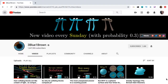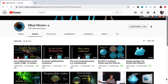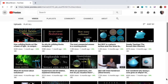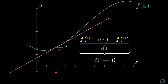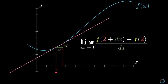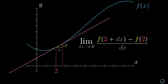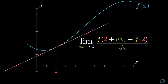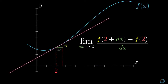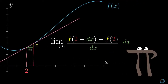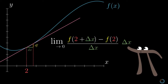Next up, we have 3Blue1Brown. This is traditionally a math channel — Grant Sanderson, the main man behind the scenes, teaches mathematical concepts using stunning visuals. For all you people aspiring to do something in AI, I highly recommend checking out his playlist titled The Essence of Calculus. He explains concepts like limits and determinants in such a visual way that you'll look at them in a completely different light, and these concepts are fundamental to many machine learning algorithms we see today. Subscribe to 3Blue1Brown for establishing your math foundations.